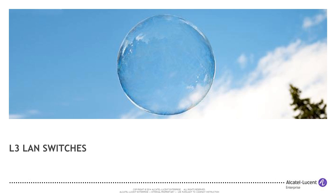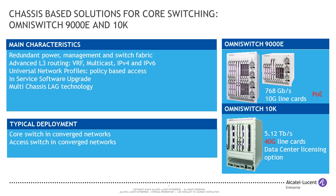Let's drill down into each of the main products in the portfolio, starting at the core with our Layer 3 offerings. We have two chassis families. One is the OmniSwitch 9000E series, and the other is the OmniSwitch 10K. The main difference is that the 9000E has PoE support, which means it can serve not only the core but also the edge. It has a 768 Gbps backplane and supports up to 10 Gbps line cards.